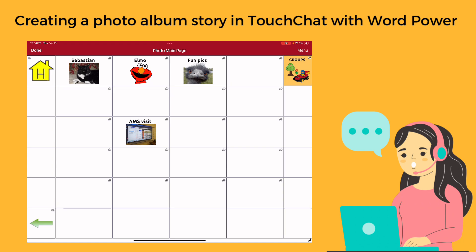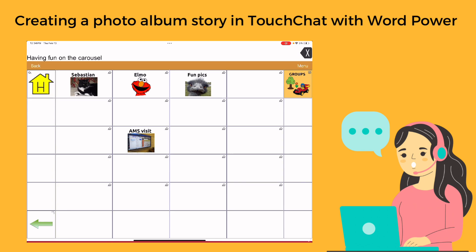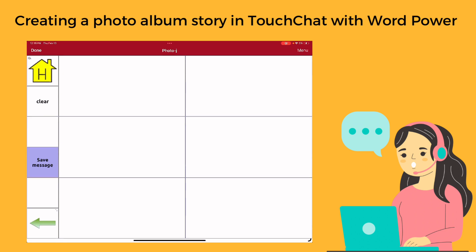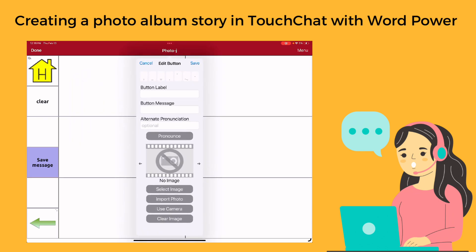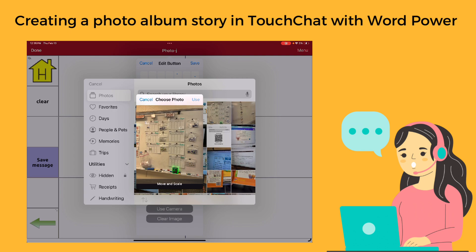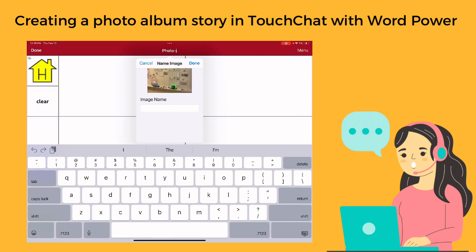Now when I want to go in and add all the other pictures for my visit and text, I'm going to select that button that I just created. I can say done to get out of edit mode and select the button that I just created. You can see I've got a blank template right here. I'm going to go back to menu, select edit page, and choose the button where I want to put my next photo. I'm going to go down to import photo from my camera roll, pick a picture, use that picture, and name it 'chart.' I say done.